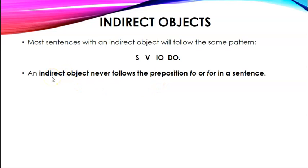Keep in mind an indirect object never follows the preposition to or for. Because that would be then the object of the preposition to or for. So in order to have an indirect object there cannot be those prepositions in the sentence.